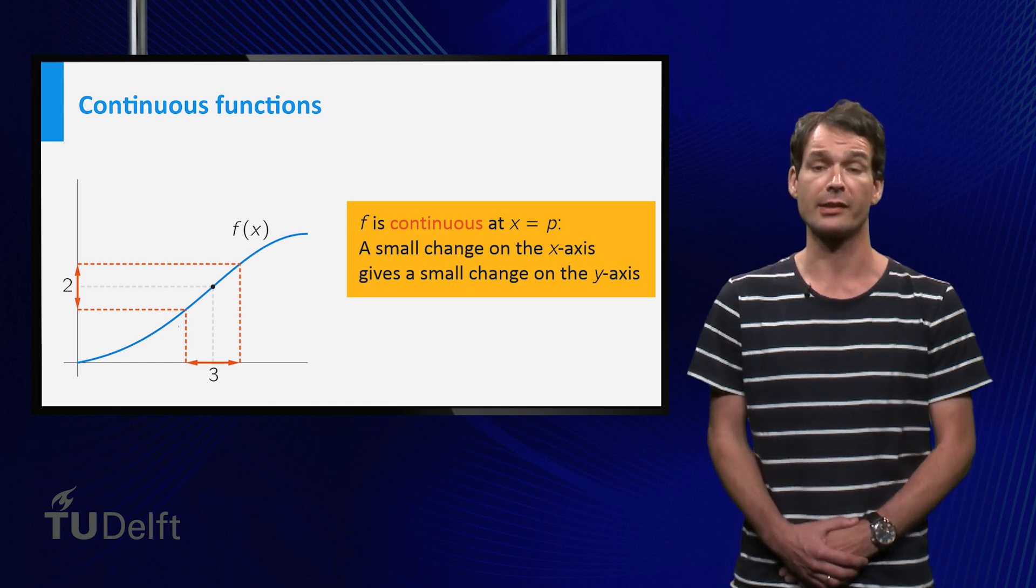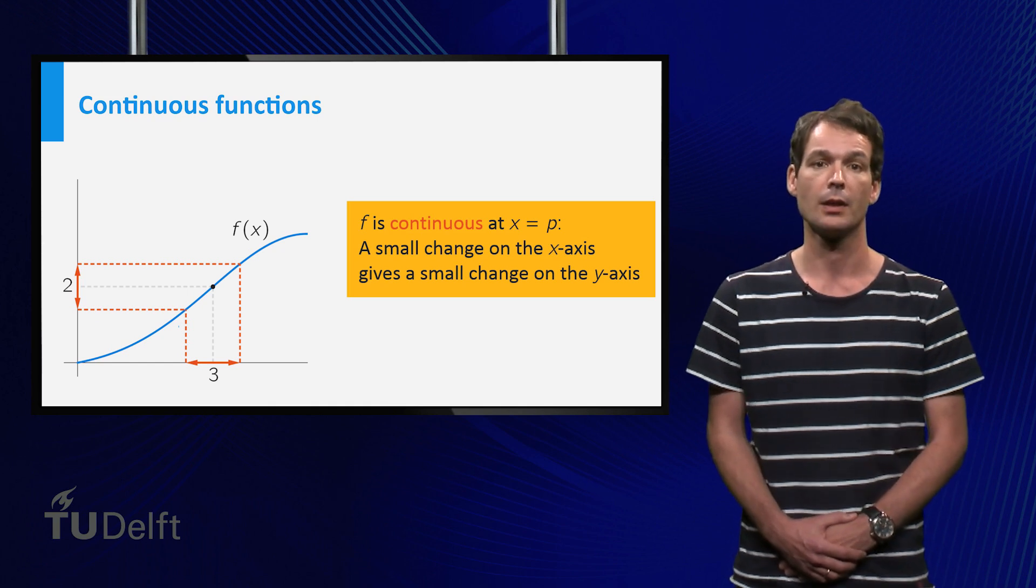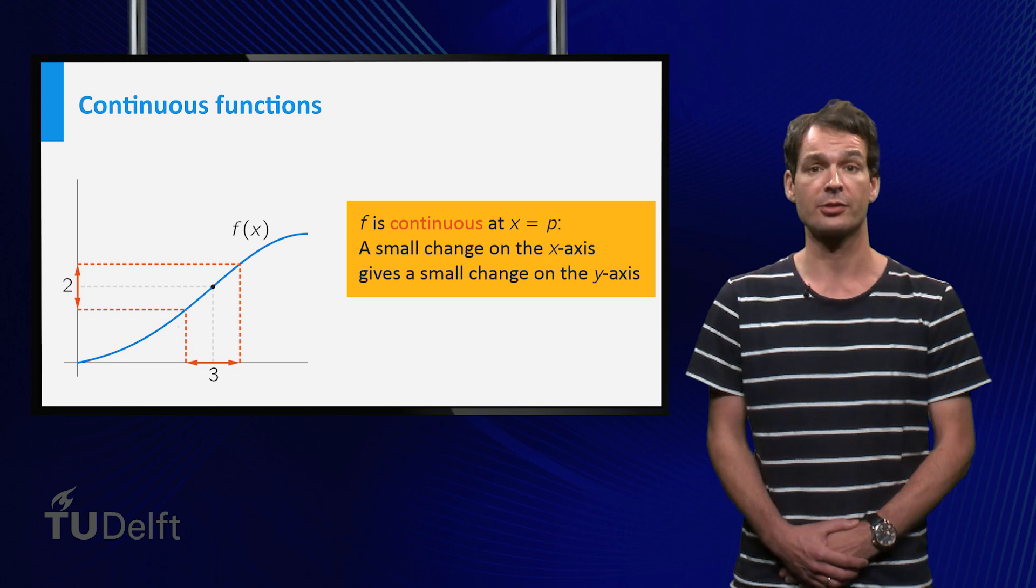A function that is continuous at any point p in the domain is called a continuous function. So the function f that you see here is continuous.